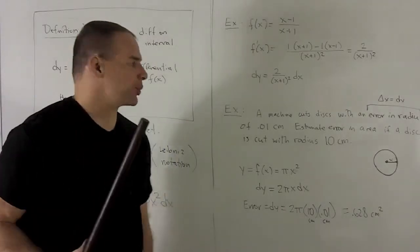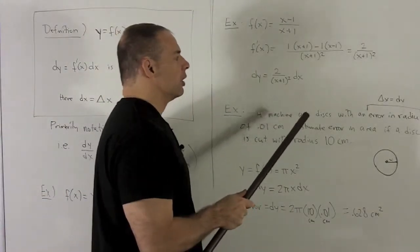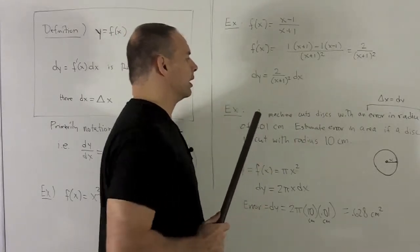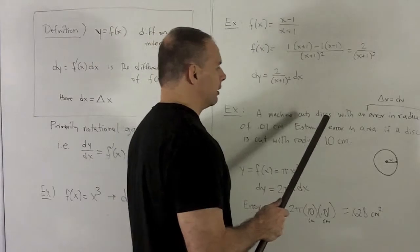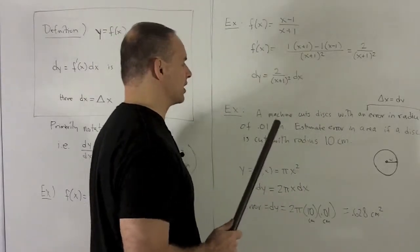Let's get back to estimating errors. All right, so I'm going to have a machine that cuts discs with an error in the radius of 0.01 centimeters. I want to estimate the error in the area if a disc is cut with a radius of 10 centimeters.